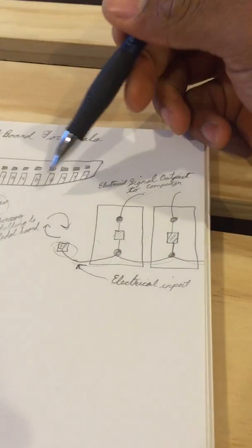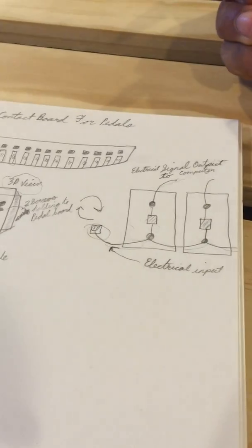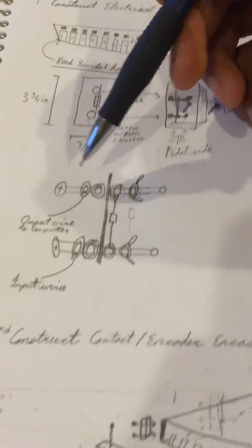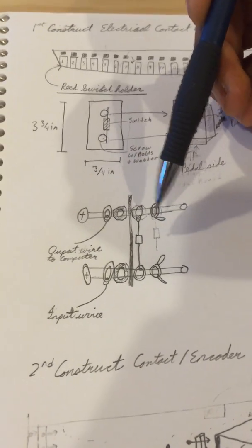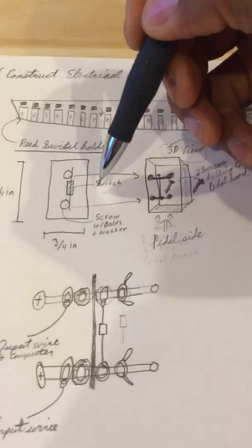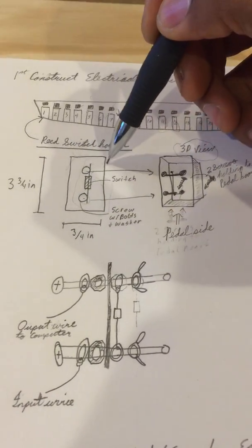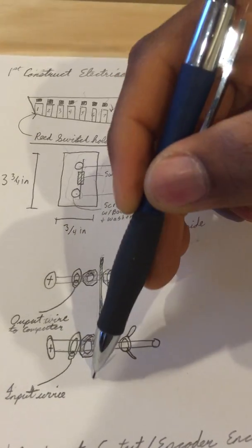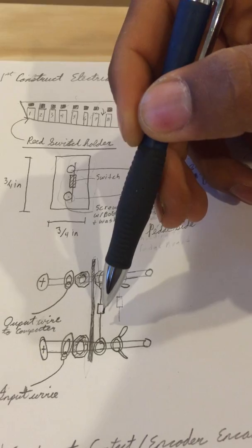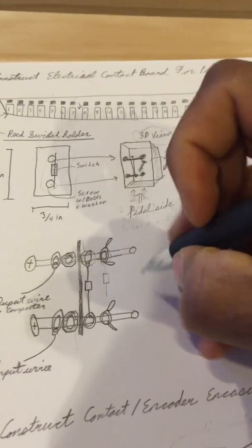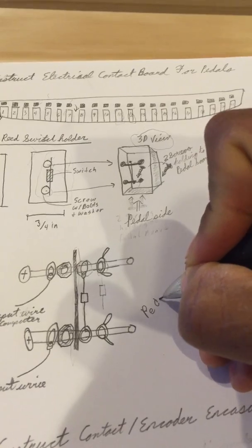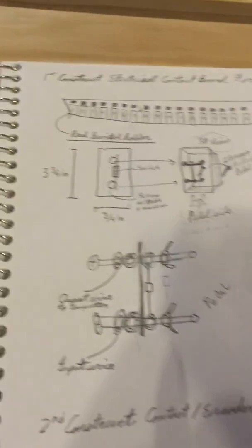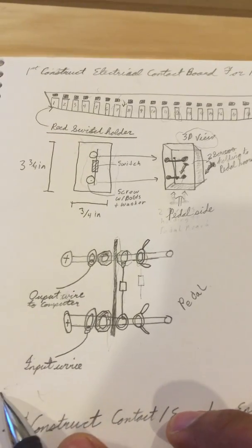The computer can recognize which current is coming from which pedal and give us our organ sound. That's the gist of it. Here I show just in more detail how we are going to mount the reed switch. Imagine again, these are our wooden holders for our reed switch. The reed switch will be on this side. The pedal will be here on this side. When you depress the pedal, it will activate the switch.